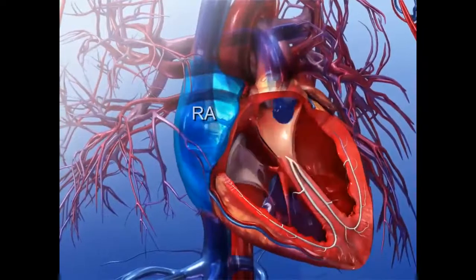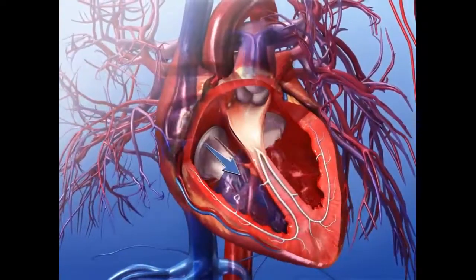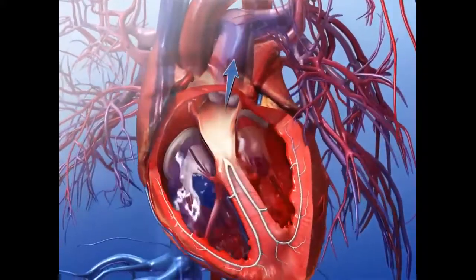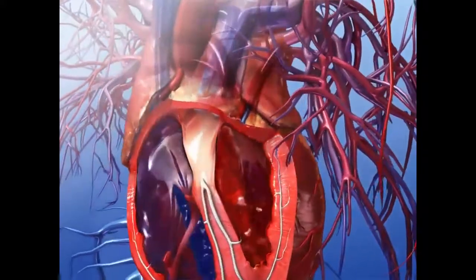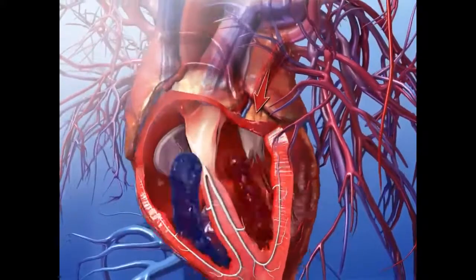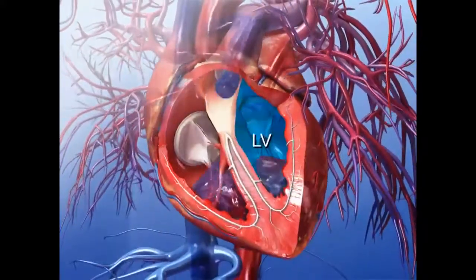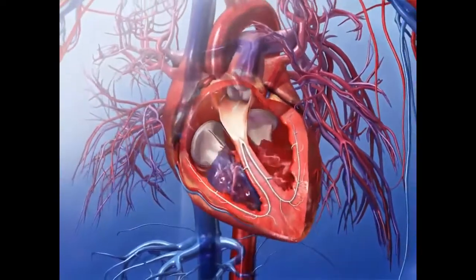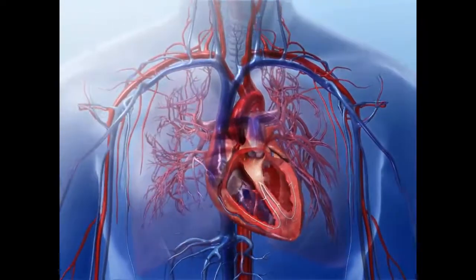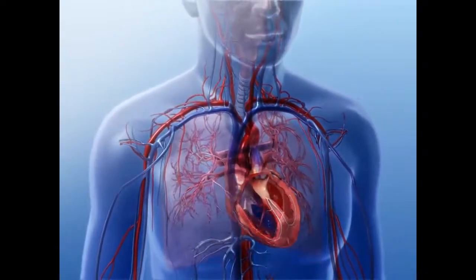The right atrium receives oxygen-depleted blood and empties it into the right ventricle. This blood then flows to the lungs for gas exchange. Oxygenated blood from the lungs enters the left atrium and empties into the left ventricle. From there, it flows out of the heart into the arteries of systemic circulation to distribute oxygen throughout the body.